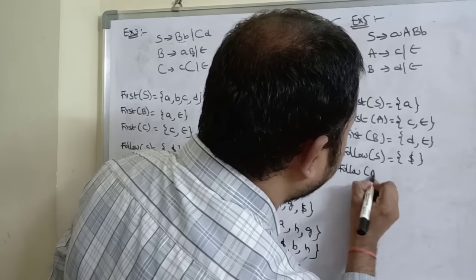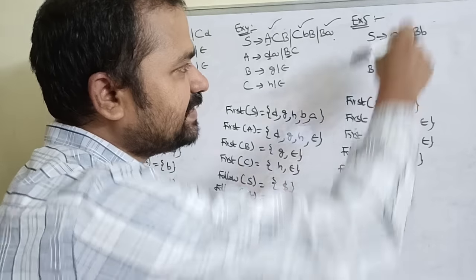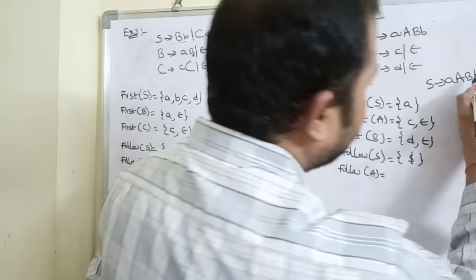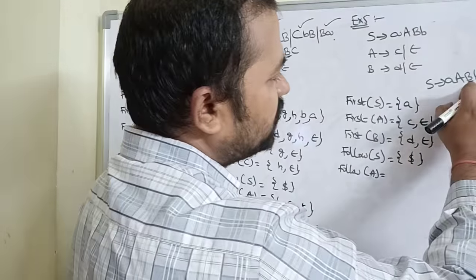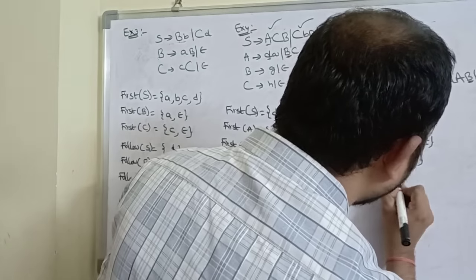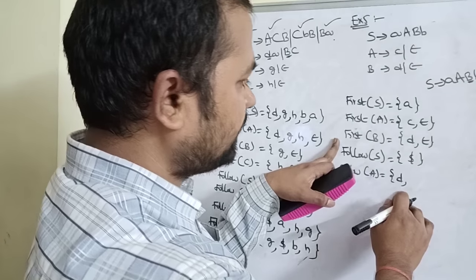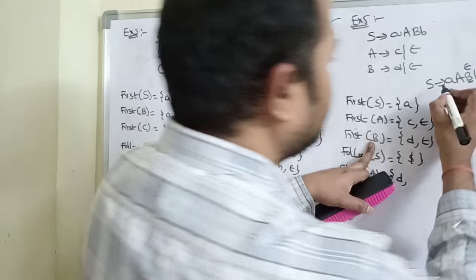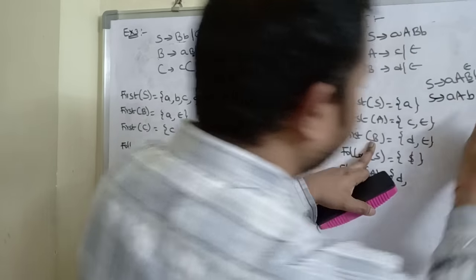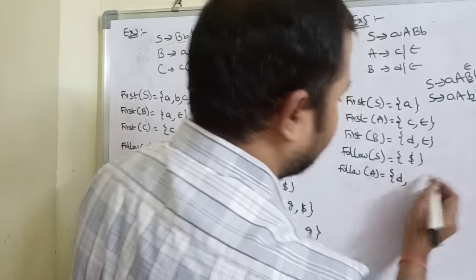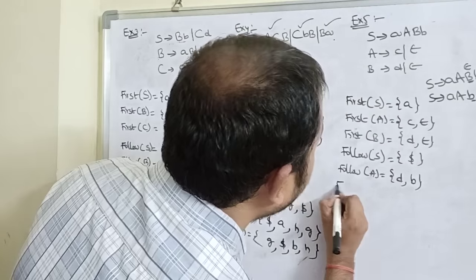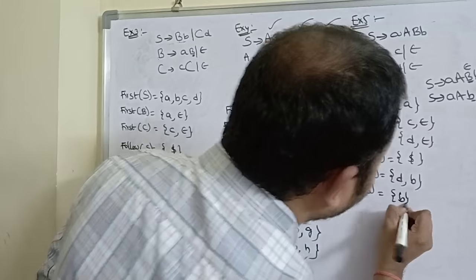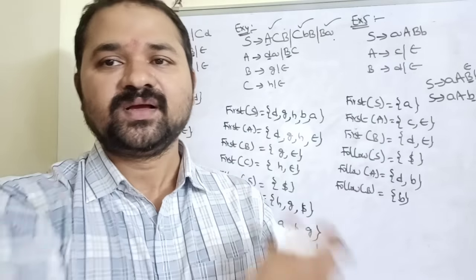FOLLOW of A: found in S implies a·A·B·B; B follows A, FIRST of B = {d, epsilon}; substitute B with epsilon giving a·A·B; small b follows A, add b. FOLLOW of A = {d, b}. FOLLOW of B: found in S implies a·A·B·B; after second B no symbol follows, so FOLLOW of B = FOLLOW of S = {dollar}. Also small b found following first B. FOLLOW of B = {b, dollar}. In this way we can calculate FIRST and FOLLOW for various grammars.